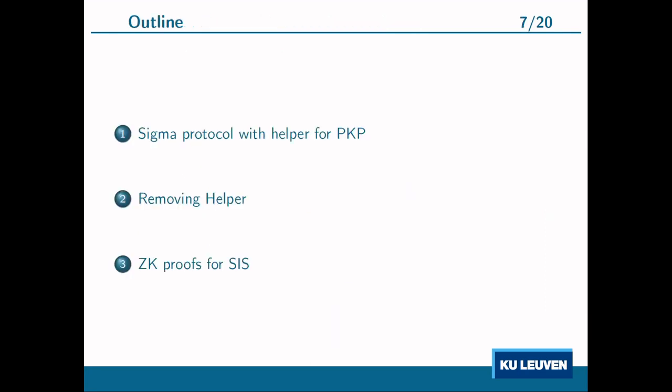So far I've given a broad overview of the paper. For the remainder of this video I'll cover three more things: first, the sigma protocol with helper for the permuted kernel problem; then, how to remove the helper to get a normal sigma protocol; and finally, how this work can improve zero-knowledge proofs for the SIS problem.